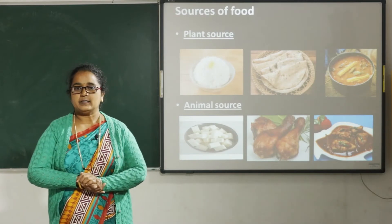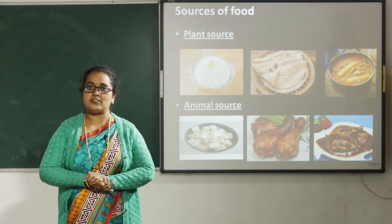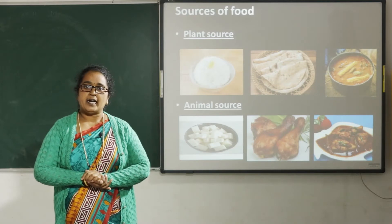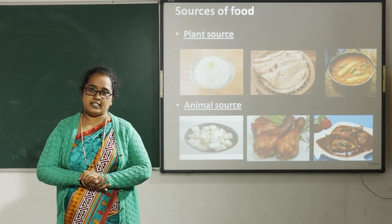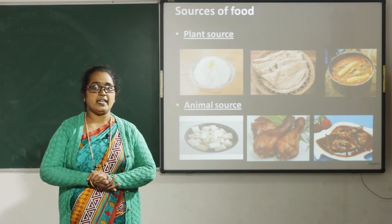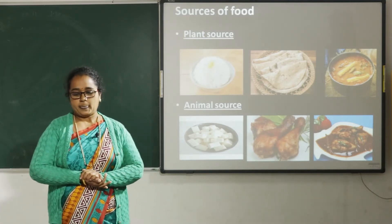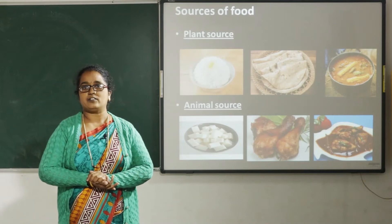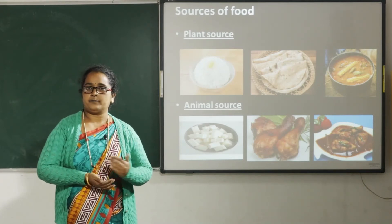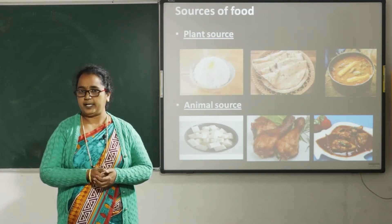For example, people eat more of Javar where Javar is grown in plenty. And people who live on the seashore get more fish, so they eat more of fish. So children, food habits of people change from person to person and from place to place.